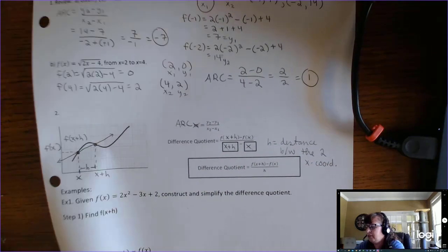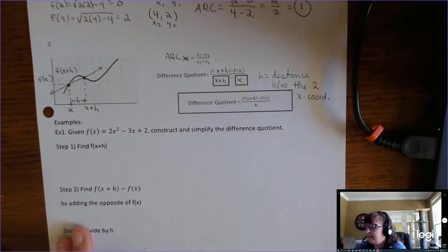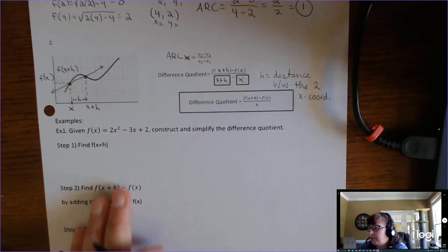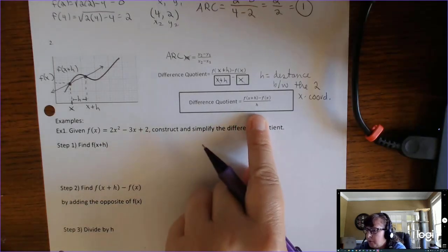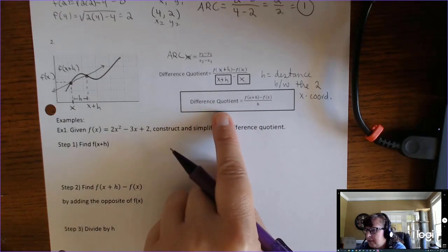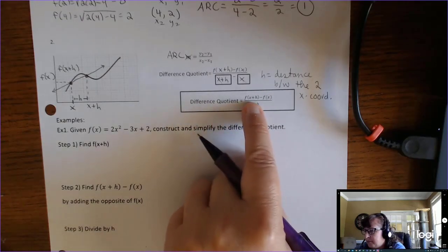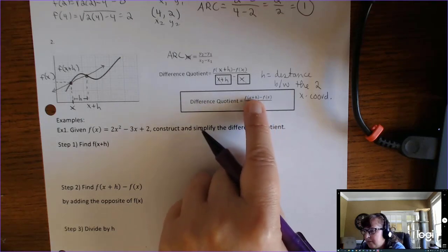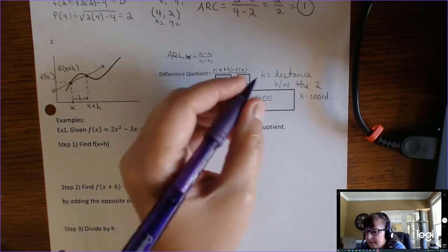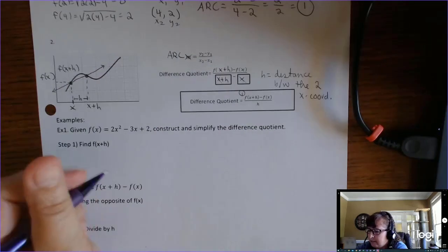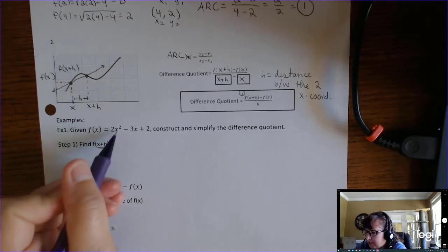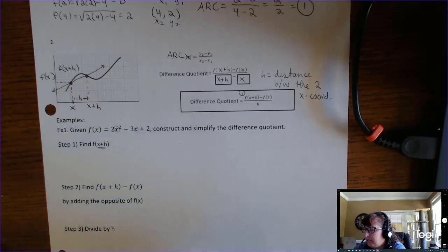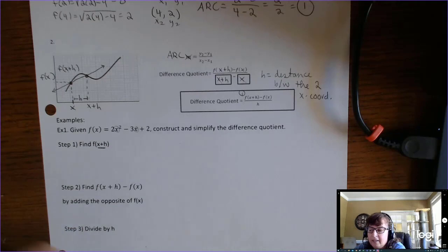Here is how you find the difference quotient given a function — broken down into three steps. Based on the formula, the difference quotient is f of x plus h minus f of x, all over h. So you would have to find f of x plus h first. f of x plus h means x plus h is the input — it goes in place of every x in the function.